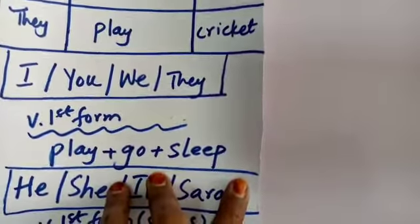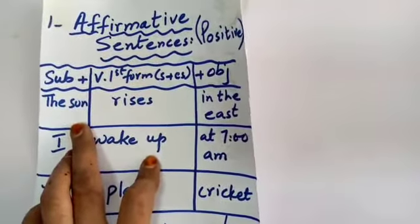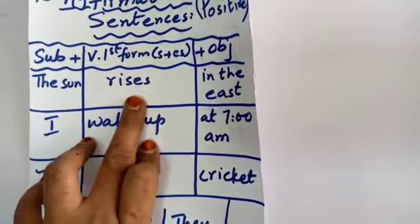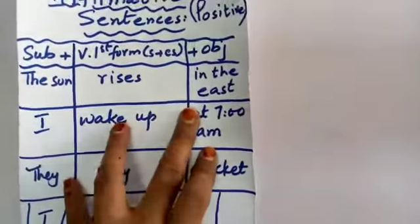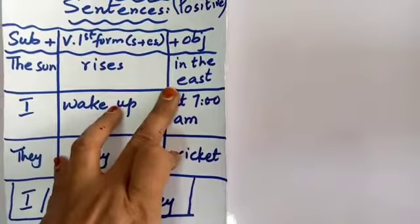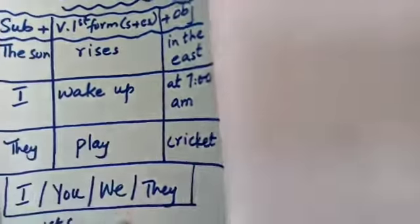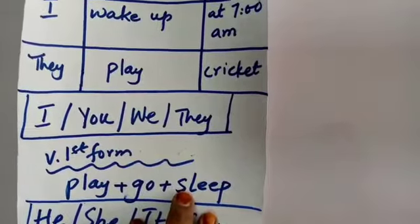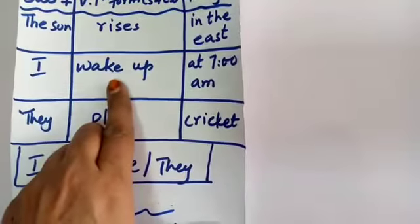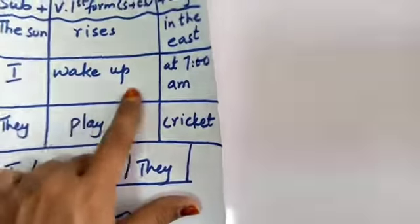You can see the chart: to make an affirmative sentence, start with the subject, then the verb first form — with 's' or 'es' where required. For example: 'The sun rises in the east' — 'sun' is singular so 'rises' gets 's'. 'I wake up at 7 am' — 'I' is considered plural so no 's' or 'es'.